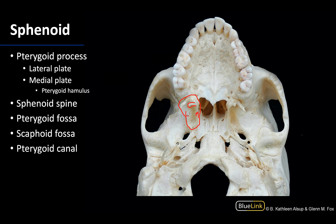Returning to this lateral pterygoid plate, it is going to be related to the infratemporal fossa — in fact, it forms the medial wall of the infratemporal fossa. It's also very important in terms of the attachments of the medial and lateral pterygoid muscles. The relationship of the pterygoid muscles to the lateral plate is where they get their medial and lateral names: the medial pterygoid muscle attaches on the medial surface, whereas the lateral pterygoid is on the lateral surface. The medial pterygoid plate is more related to the pharyngeal region, serving as an attachment point for the pterygomandibular raphe and superior pharyngeal constrictor.